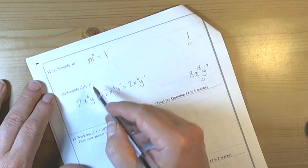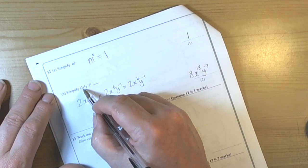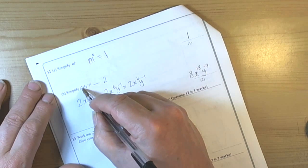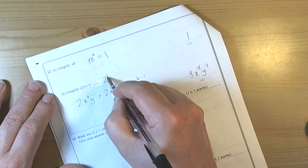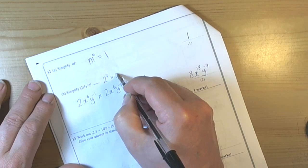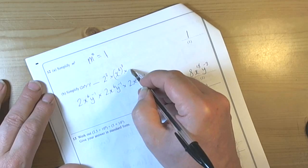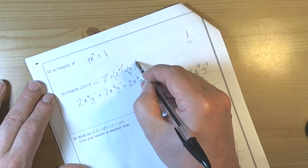The quickest way of doing this one though would be to recognize that if we're doing power raised to another power, then we simply multiply the powers. So the first thing would be 2 to the power of 3 times x to the power of 6 to the power of 3 times y to the minus 1 to the power of 3.